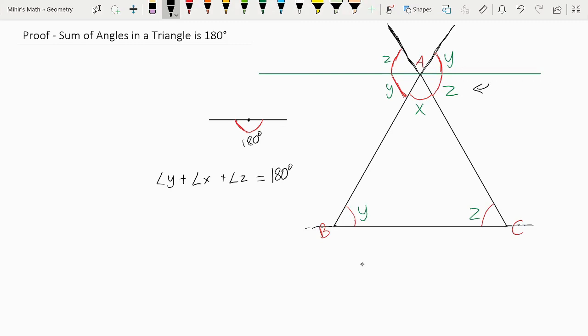And as we can see, these angles Y, X, and Z have the same measure as the angles inside of this triangle. So that means all these angles inside of a triangle add up to 180 degrees.